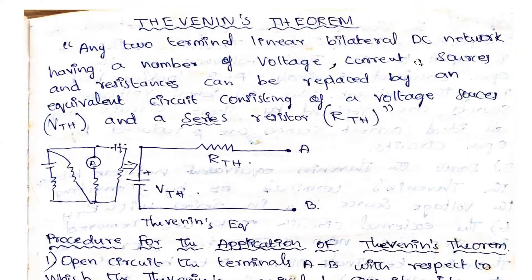Thevenin's theorem states that any two bilateral linear DC network having a number of voltage and current sources and resistance — say for example, a complex circuit like this — can be replaced by an equivalent circuit consisting of a voltage source VTH and a series resistance RTH with the load resistance opened.